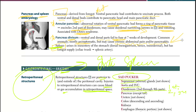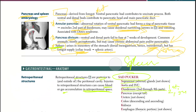Now, the spleen: the spleen arises in the dorsal mesogastrium, hence it is mesodermal in origin. However, it has a foregut blood supply via the celiac trunk and splenic artery. This is important — the celiac trunk supplies the foregut but also supplies this one mesodermal structure, the spleen.